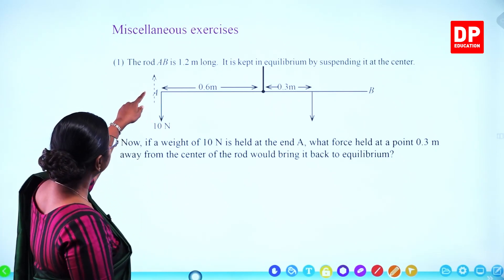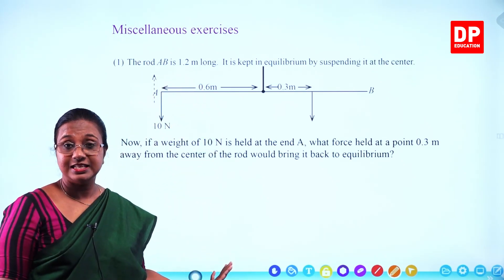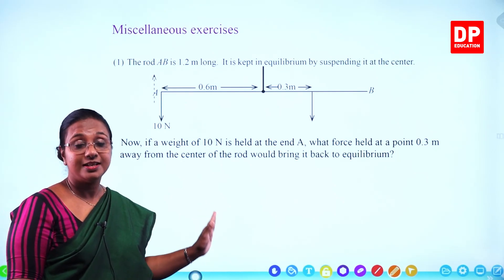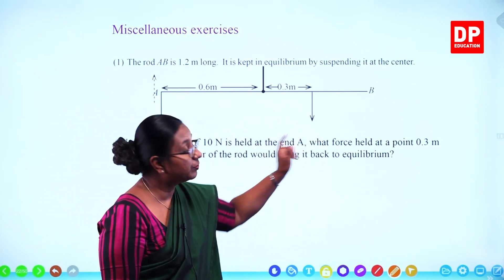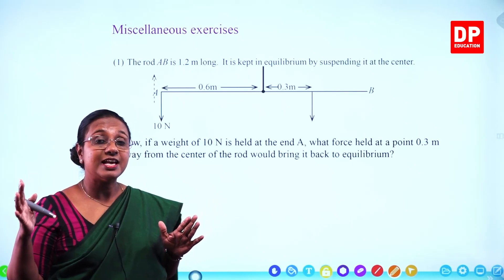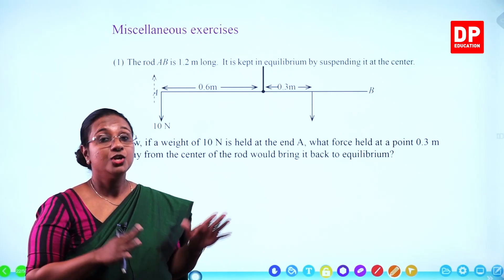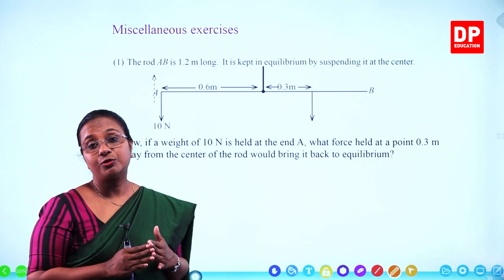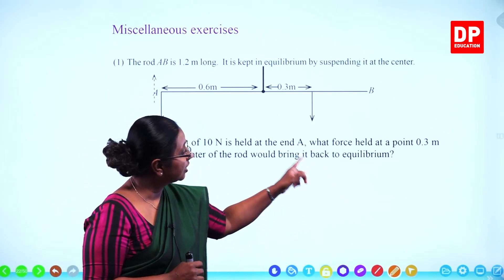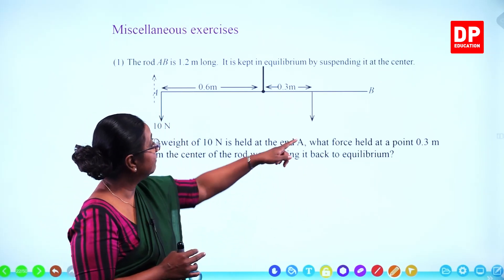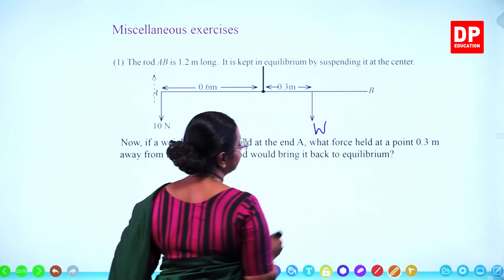Initially when you attach the 10 newton weight at point A, the rod will rotate in the anti-clockwise direction. If you want to bring it to equilibrium, you have to put a weight on the other side so that there is an equal moment of force acting in the clockwise direction. When the anti-clockwise moment is equal to the clockwise moment, it comes to equilibrium. That is what we need to find here — the weight that has to be attached there. I will write it as W.